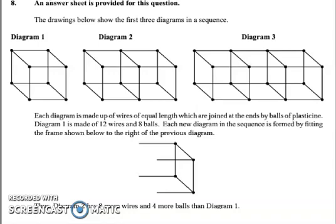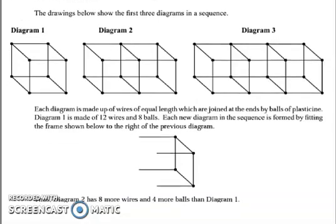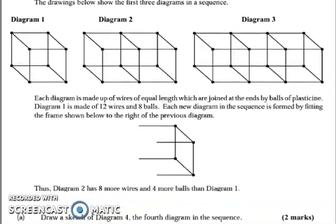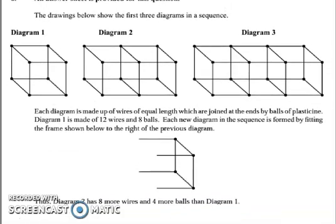Each new diagram in the sequence is formed by fitting the frame shown below to the right of the previous diagram. Thus, diagram 2 has 8 more wires and 4 more balls than diagram 1.